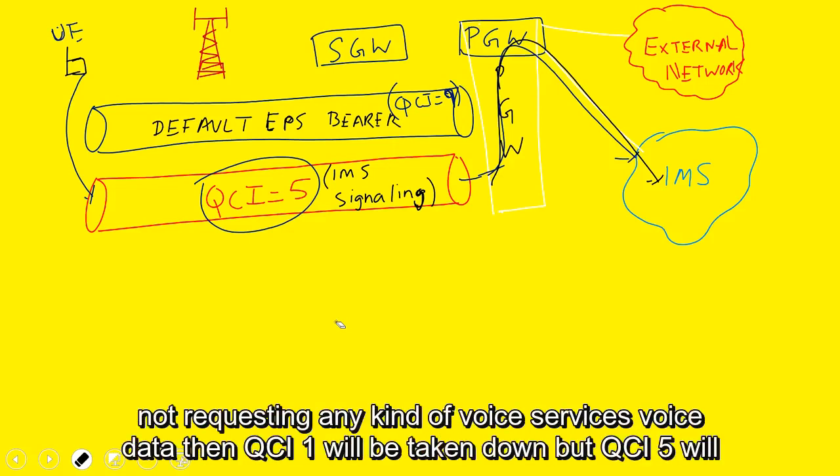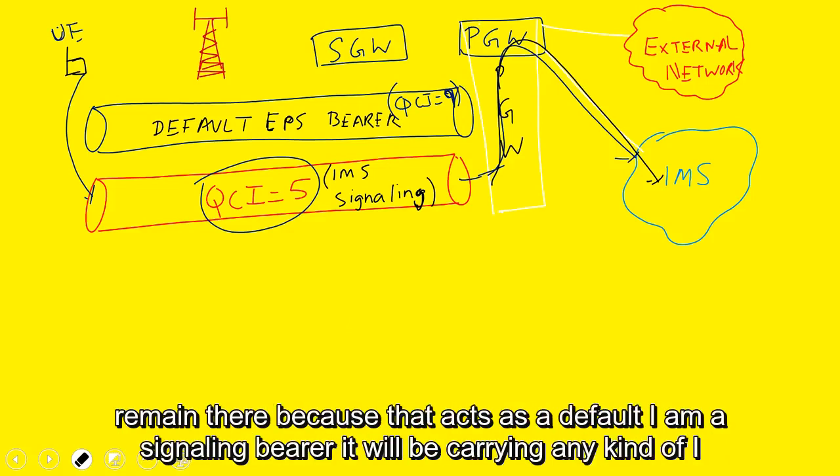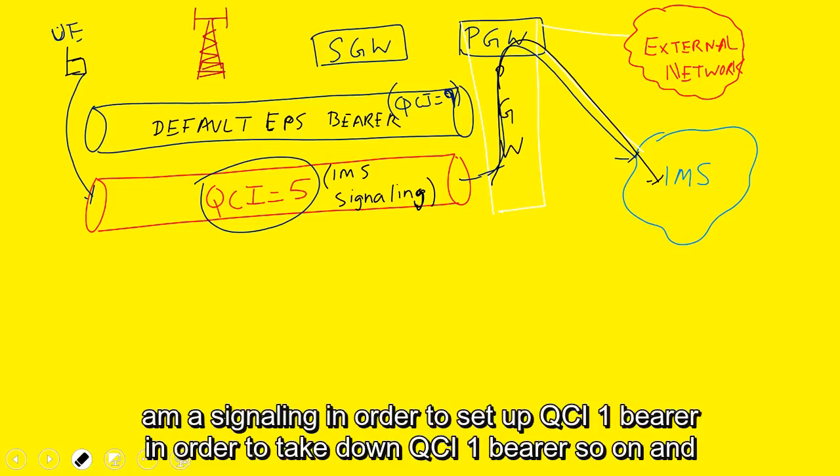Once you are not requesting any kind of voice services or voice data, then QCI1 will be taken down. But QCI5 will remain there because that acts as a default IMS signaling bearer. It will be carrying any kind of IMS signaling in order to set up QCI1 bearer, in order to take down QCI1 bearer, so on and so forth.